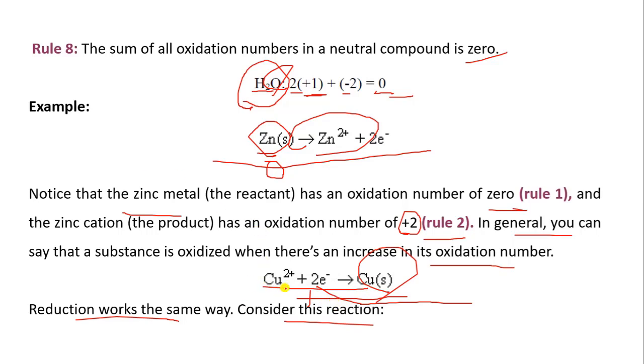Here there is reduction, the gaining of electrons. Reduction works the same way. Consider this reaction. You can see plus 2 will convert to zero. There is a lower in the oxidation state. When copper is in cation form, it is plus 2. But when there is a metal, it is zero.